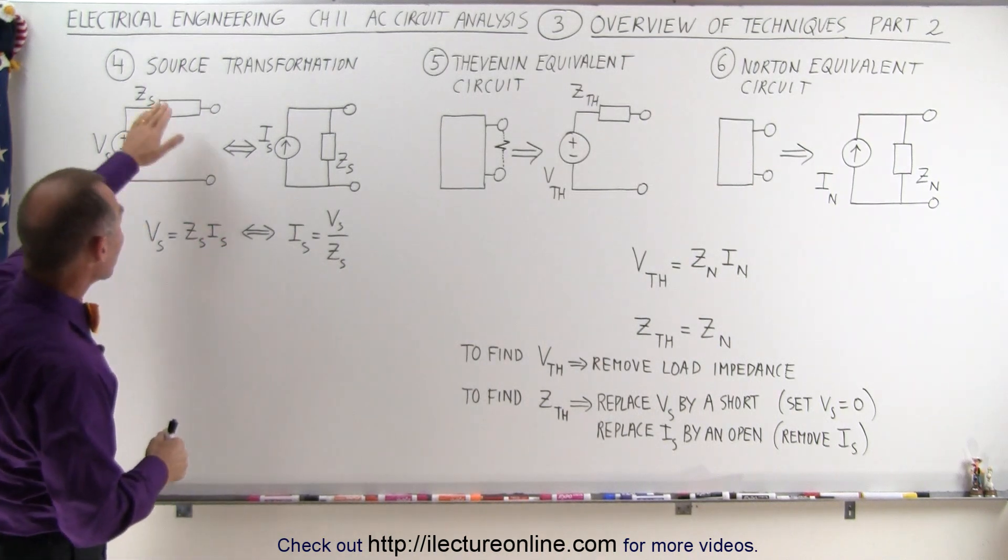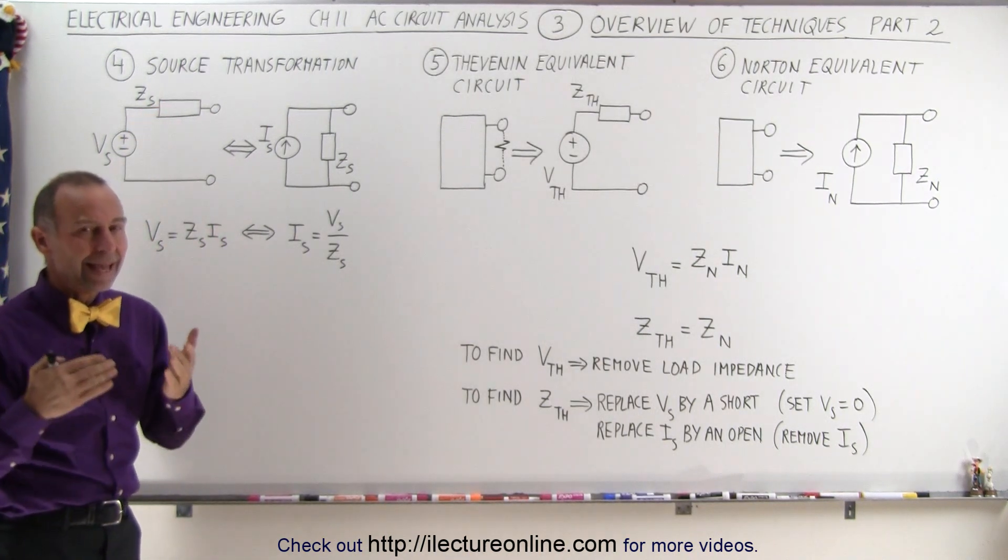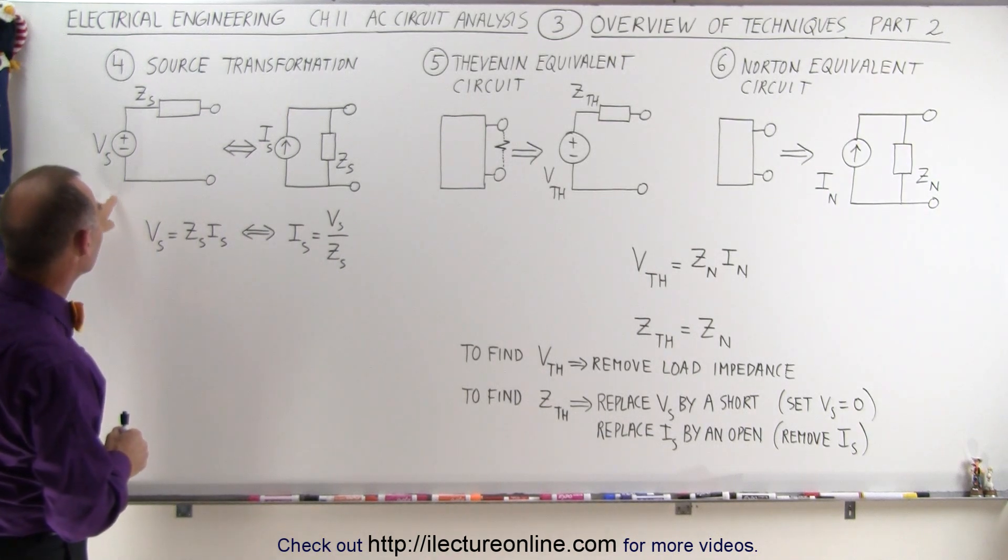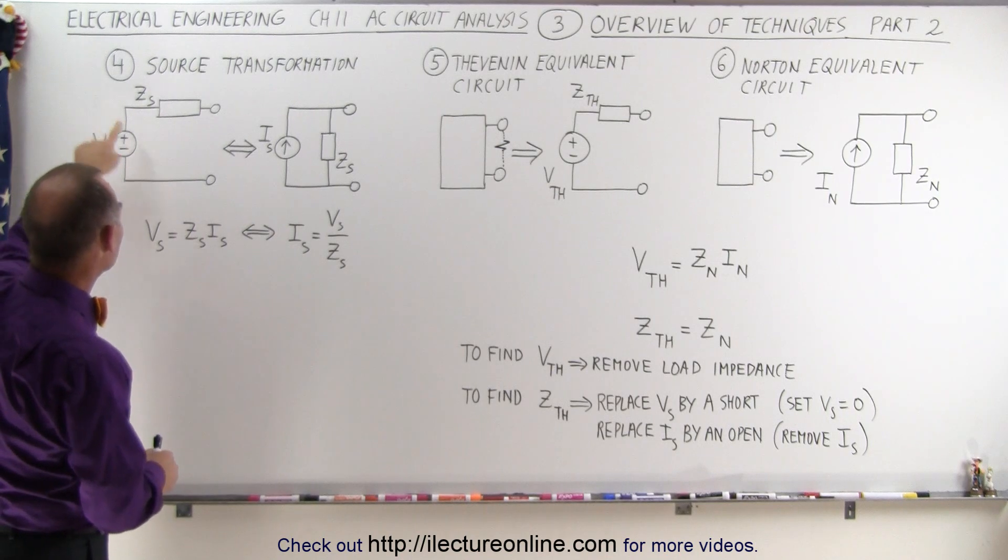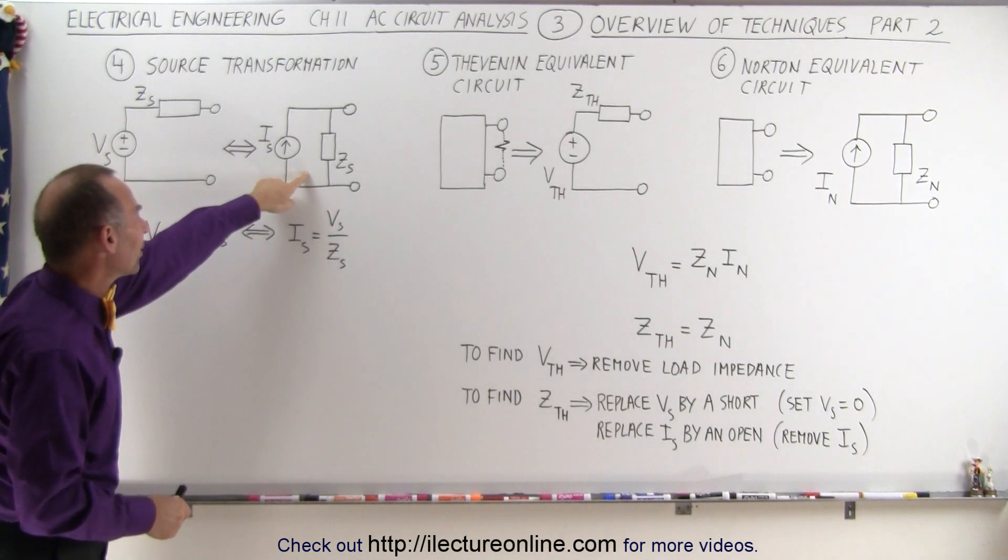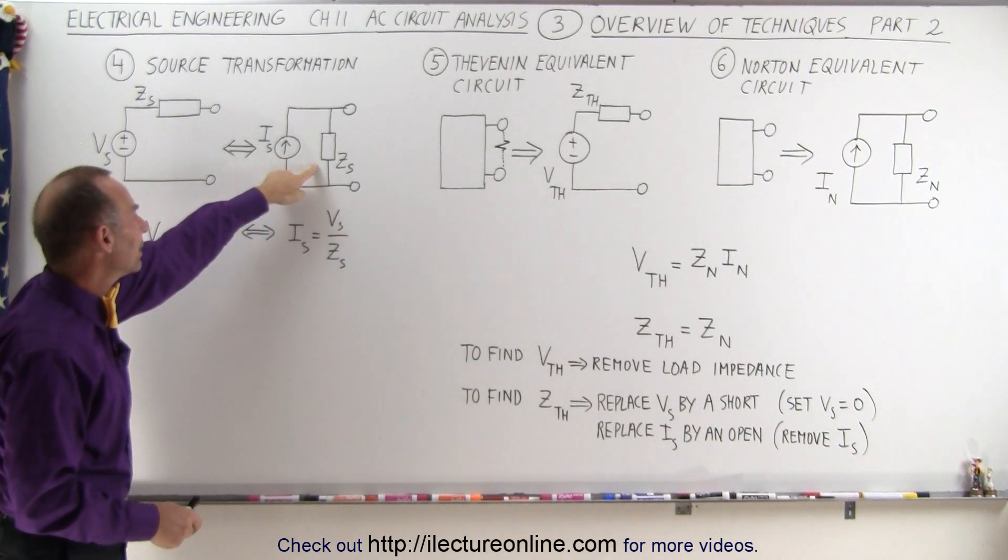The source transformation is sometimes a very handy method when we have a lot of branches and we want to be able to convert from a series branch, where we have a voltage source and impedance, to a parallel branch where we have a current and the impedance.